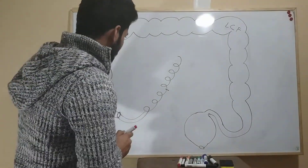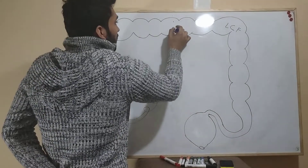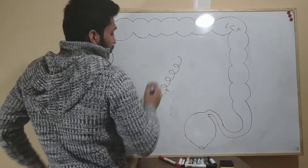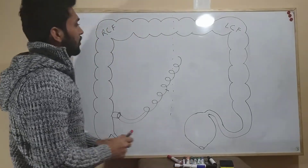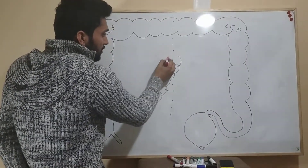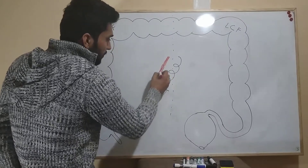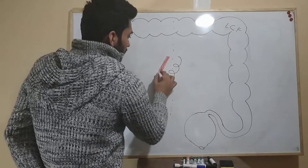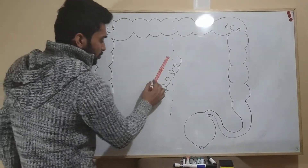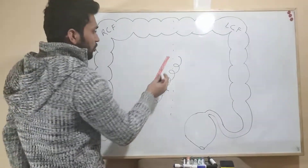Now I will draw the superior mesenteric artery. From the abdominal aorta, at the level of lumbar one on the right side, the superior mesenteric artery originates. First I will draw the arteries and then I will name them. The first branch of the superior mesenteric artery is the middle colic artery.